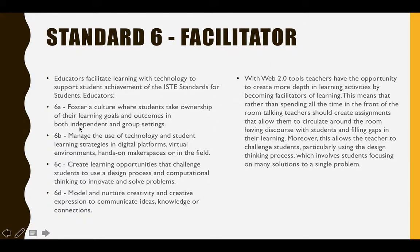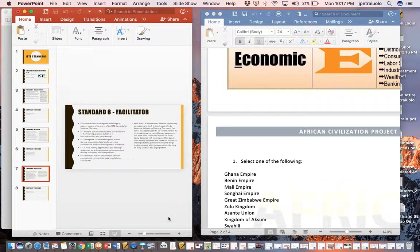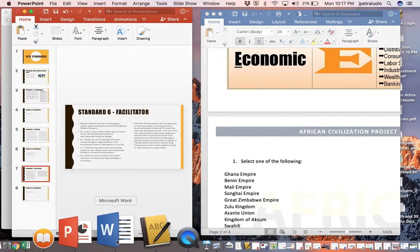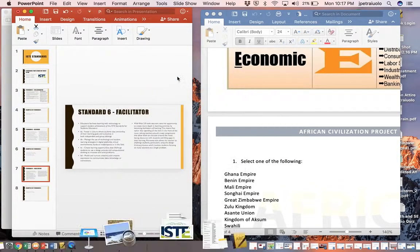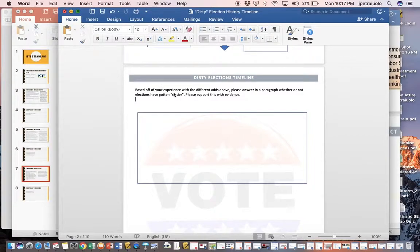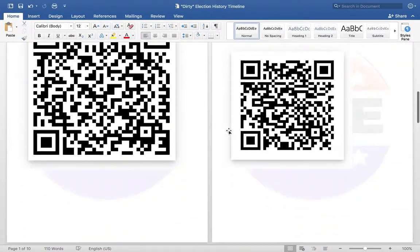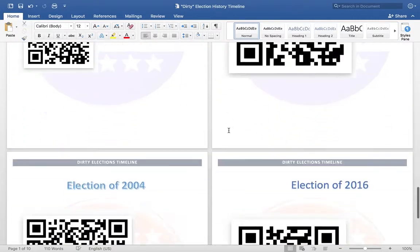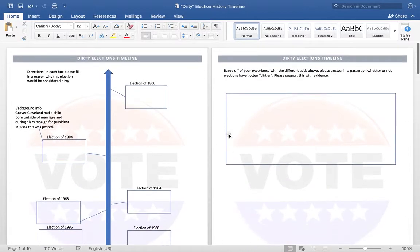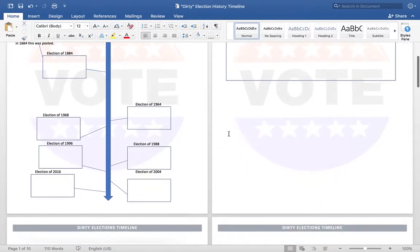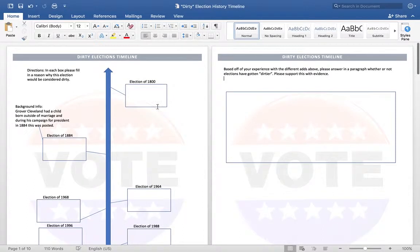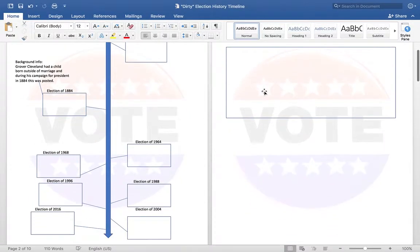Standard 6A is to foster a culture where students take ownership of their learning goals and outcomes, and to model and nurture creativity. The 'dirty election timeline' is an activity students work on. It's one I was using QR codes with because it was in person, but you don't need to do that — in an online learning environment there are other ways. Basically, students were watching a series of election ads from across American history,